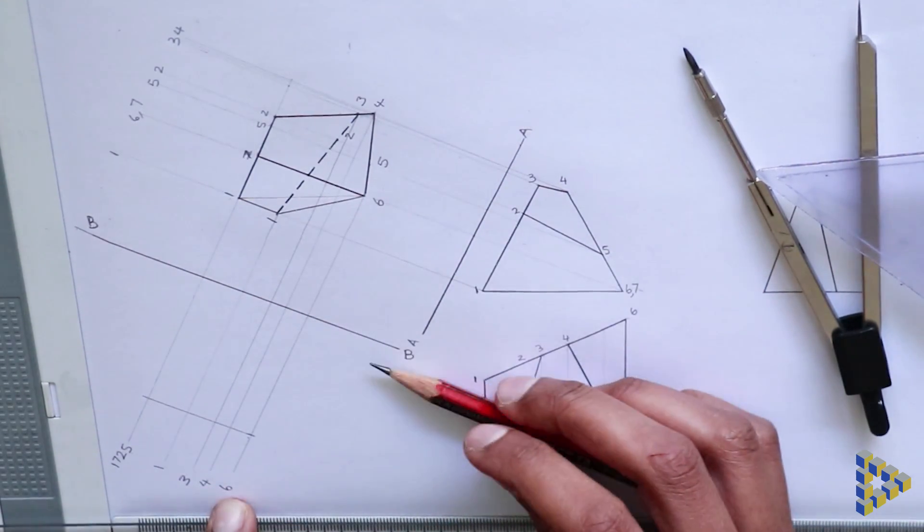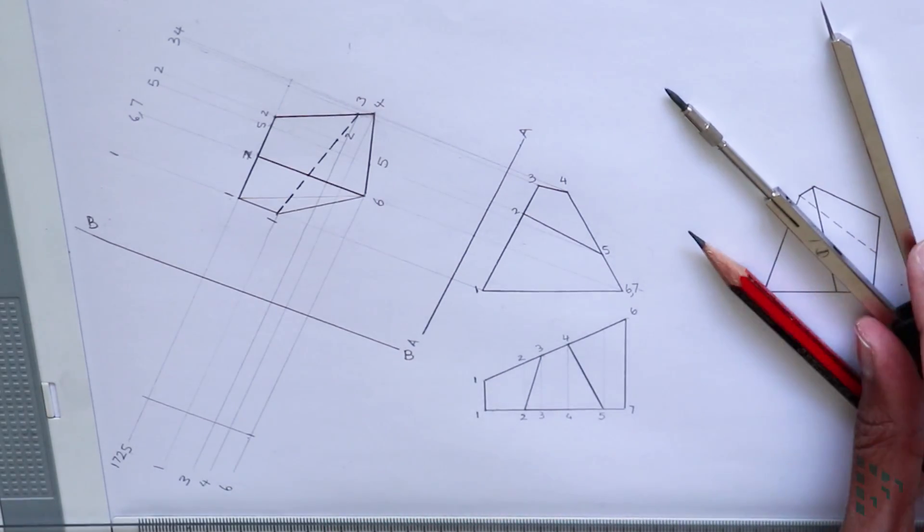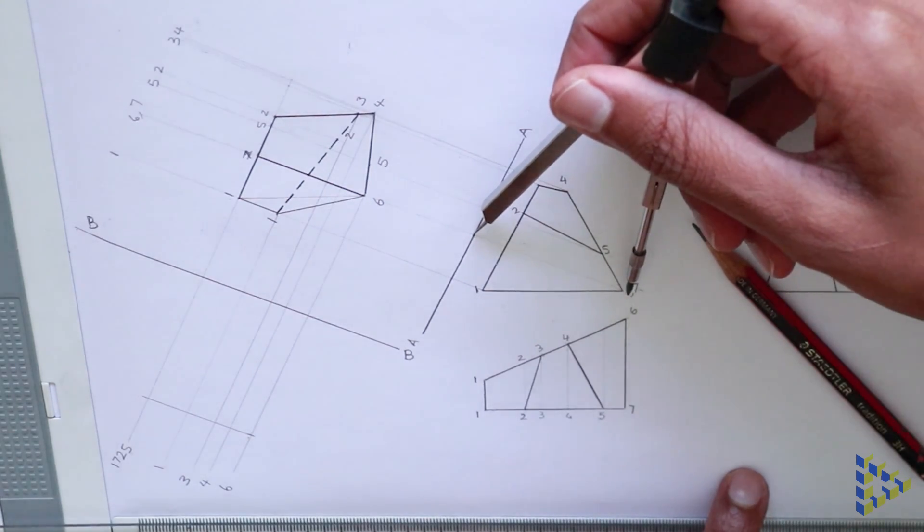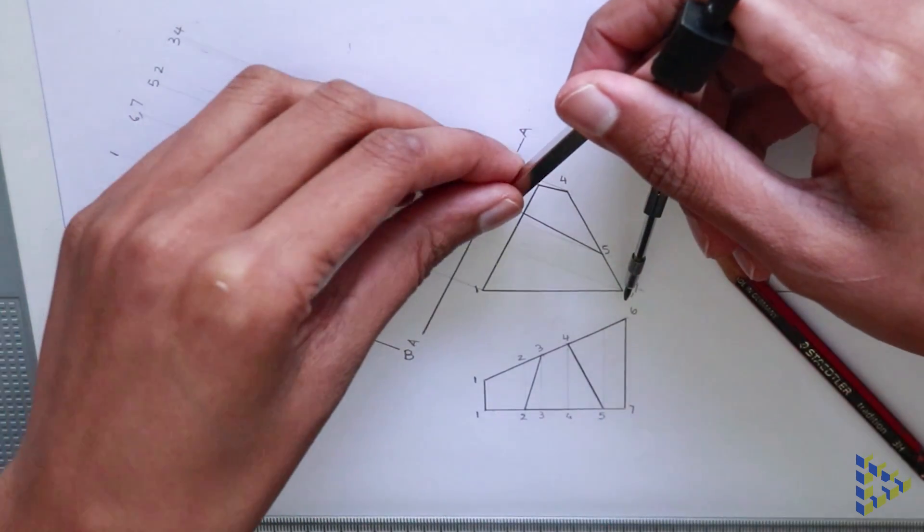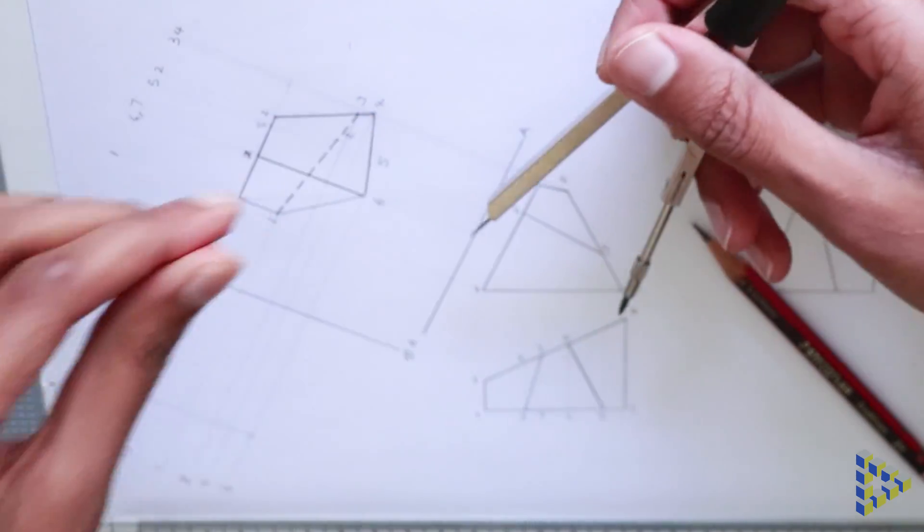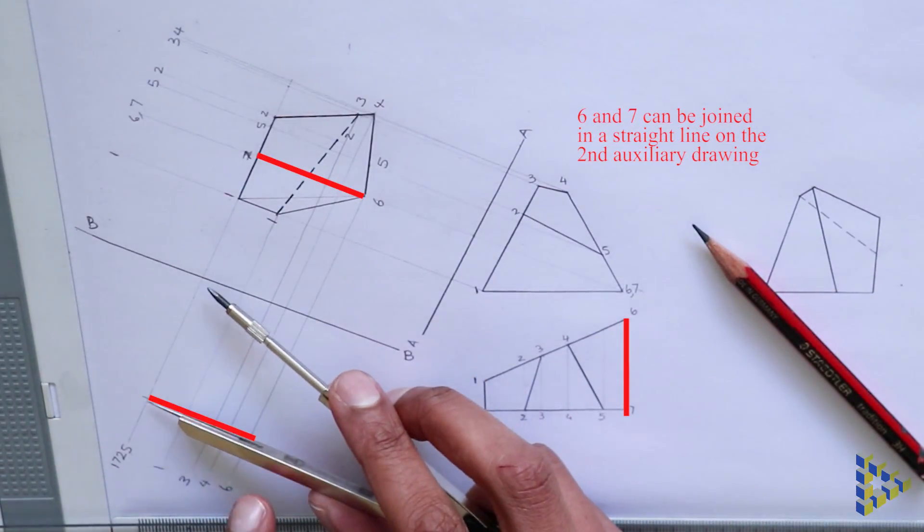Again, follow through by labelling all lines. 6 and 7 on the front view are at the same position. Measure their perpendicular distance to the axis AA and mark this distance off on the construction lines 6 and 7. 6 and 7 are joined in a straight line so they can be joined on the secondary auxiliary drawing.